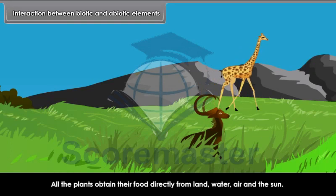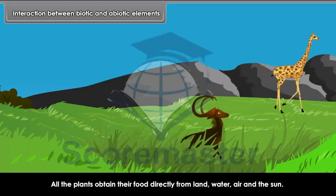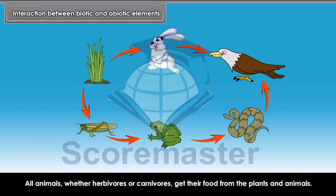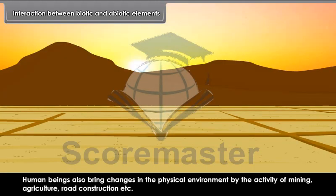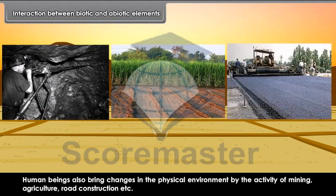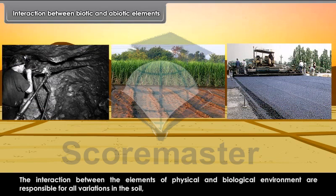All animals, whether herbivores or carnivores, get their food from the plants and animals. Human beings also bring changes in the physical environment by the activity of mining, agriculture, road construction, etc. The interaction between the elements of physical and biological environment are responsible for all variations in the soil, vegetation and distribution of plants and animals.